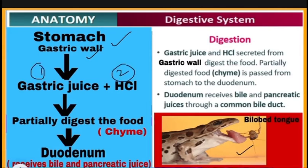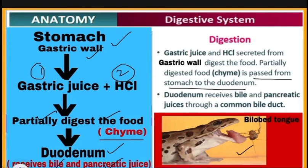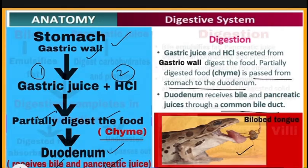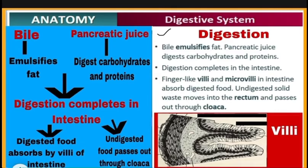The gastric wall of the stomach secretes gastric juice and hydrochloric acid, which partially digest the food. This partially digested food is called chyme. Chyme passes from the stomach to the duodenum, which is the first part of the intestine. It receives bile and pancreatic juice through a common bile duct. Bile emulsifies fat, breaking it into smaller pieces, while pancreatic juice digests carbohydrates and proteins.